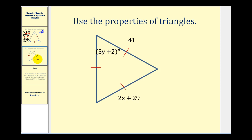Let's look at another example. Here we want to determine the value of x and the value of y. Let's start with the value of y since it's very similar to the last problem. Again we have an equilateral triangle, which means it's also equiangular. So each of the angles must have a measure of 60 degrees, so 5y plus 2 must equal 60.